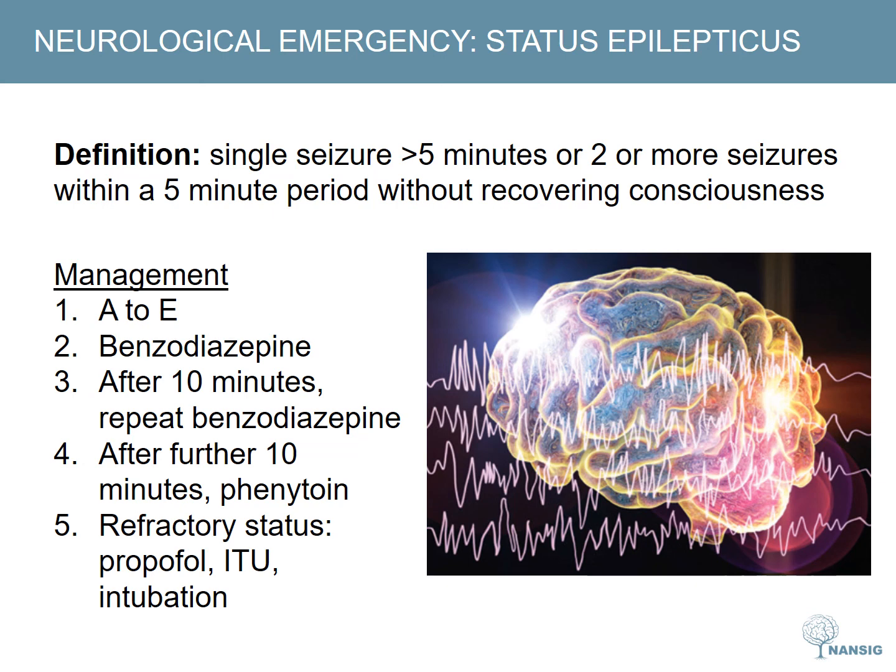If after waiting 10 minutes the seizure continues, you can repeat midazolam or give another benzodiazepine such as 4 milligrams lorazepam IV. Ten minutes after this, the patient is officially in established status and needs to be given phenytoin. If this still does not work, the patient is in refractory status and should be given propofol, transferred to ICU for intubation and monitored continuously, including an EEG.